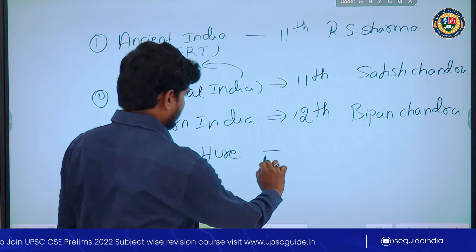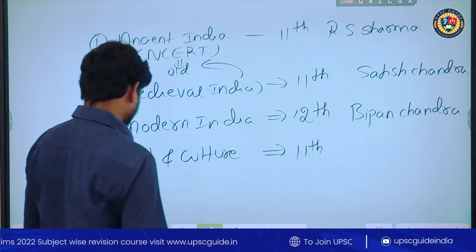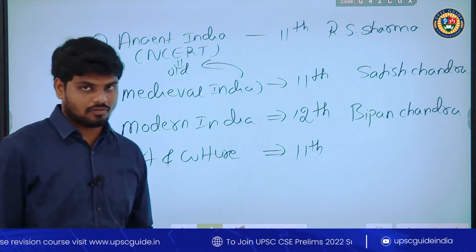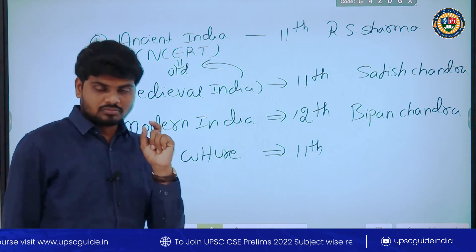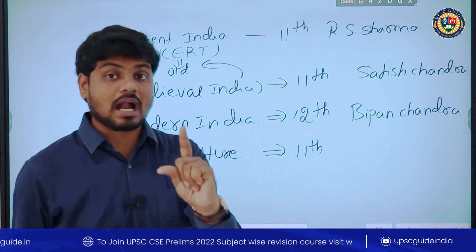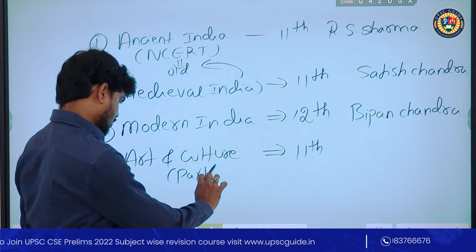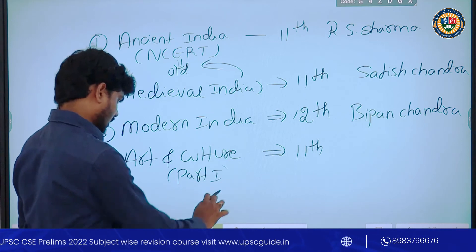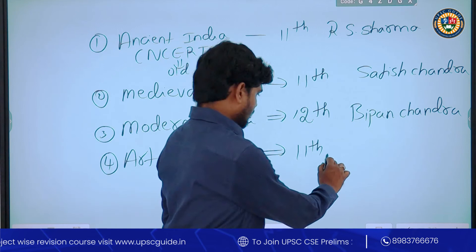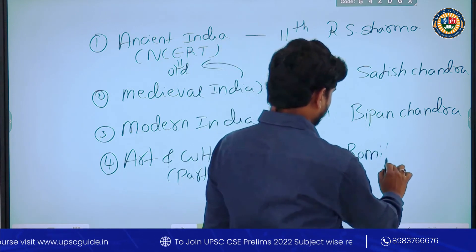The fourth book is Art and Culture — 11th class. The actual book name is 'An Introduction to Art and Craft, Part One,' 11th class old NCERT, by Romila Thapar.